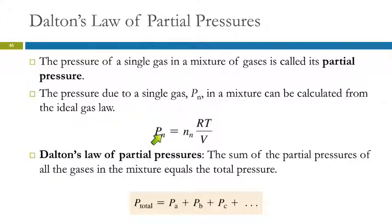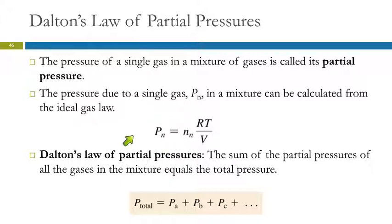We can calculate the pressure from an individual gas in a mixture. For gas N, the pressure equals the number of moles times R times T divided by V — just a rearrangement of the ideal gas law. Dalton's Law of Partial Pressures says that the total pressure of a gas mixture equals the sum of the partial pressures of each individual gas in the mixture.